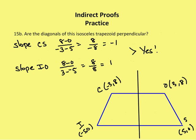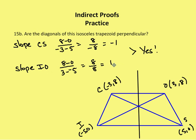The second question asks: are the diagonals of this isosceles trapezoid perpendicular? We draw diagonals CS and IO. If they are perpendicular, then the slopes of those two lines are going to be opposite reciprocals of each other. I find the slope of CS to be -1, and the slope of IO to be 1. So yes, in fact, the diagonals of this isosceles trapezoid are perpendicular because the slopes are opposite reciprocals.